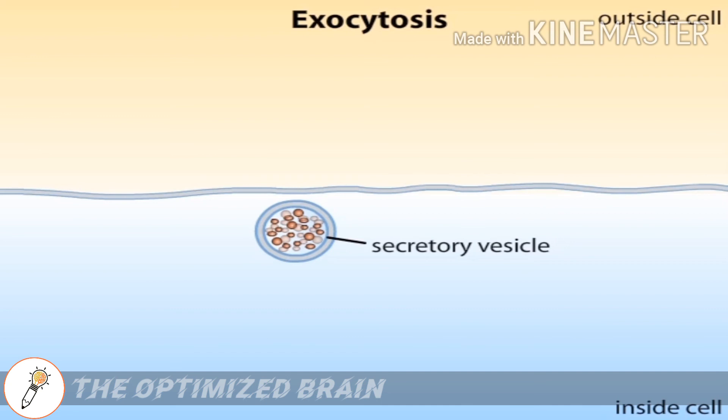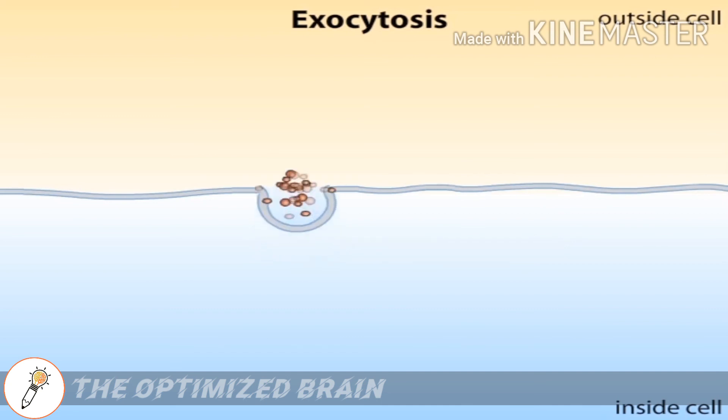The vesicle membrane and plasma membrane fuse together. The contents of the vesicle spill outside the cell while the vesicle membrane is smoothly incorporated into the plasma membrane.